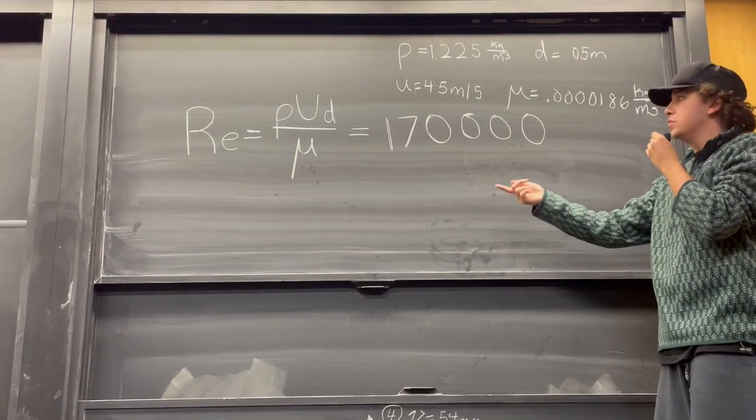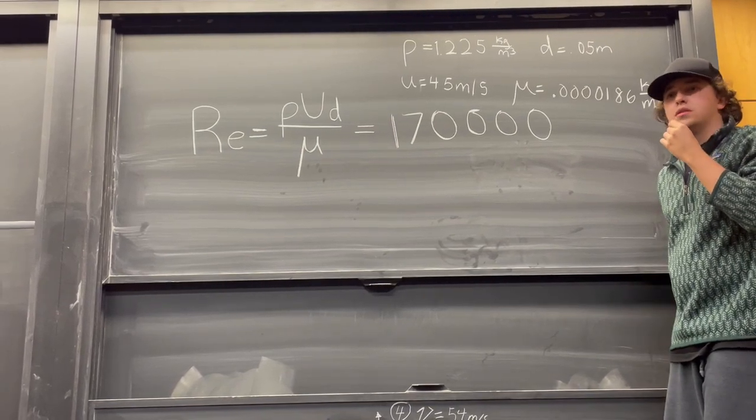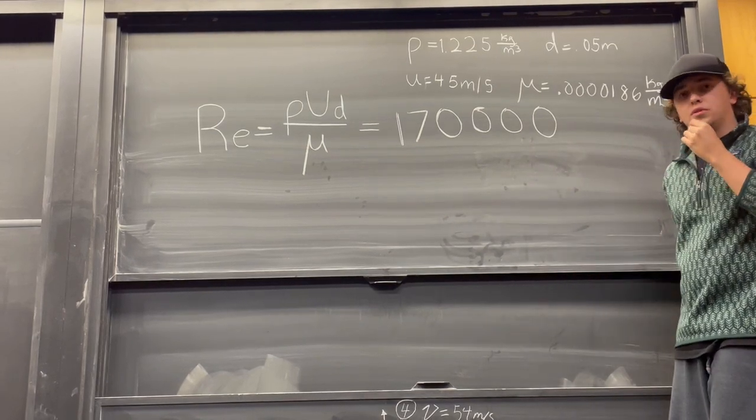Plugging all that into our Reynolds number equation, we get 170,000, which is a very large Reynolds number indicating the flow does not have viscous losses. So we can safely ignore that in our Bernoulli analysis.